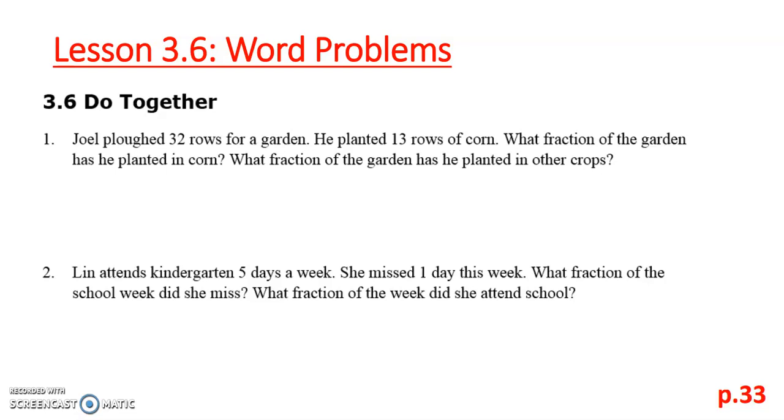So number one, Joel plowed 32 rows for a garden. He planted 13 rows of corn. What fraction of the garden has he planted in corn? What fraction of the garden has he planted in other crops? Well, we know that his garden is a maximum of 32 rows. And we know that in corn, he's planted 13 of them. So 13 out of the 32 rows are corn.